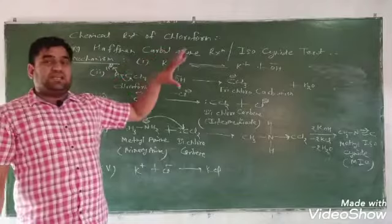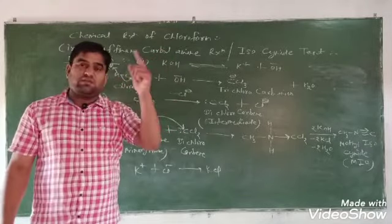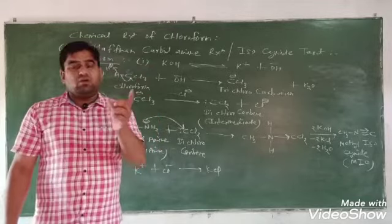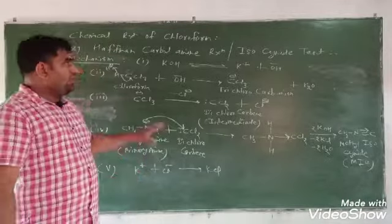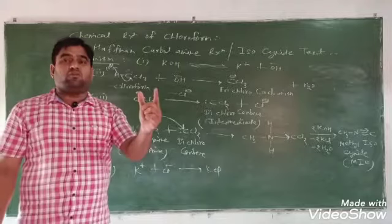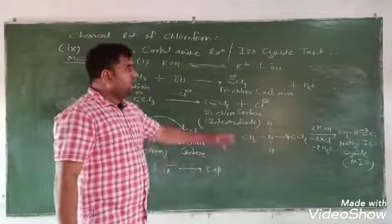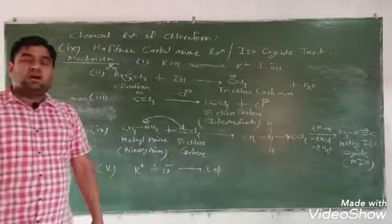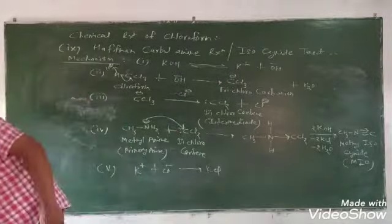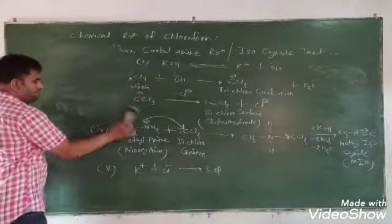This reaction can be used to identify primary amines as well as chloroform. So the reaction is used for the identification of both primary amines and chloroform, which is why it is called the isosynide test.